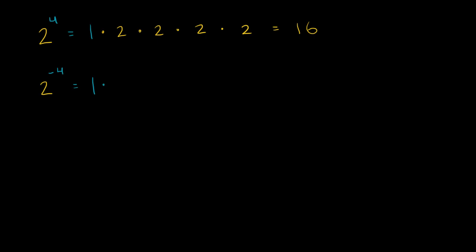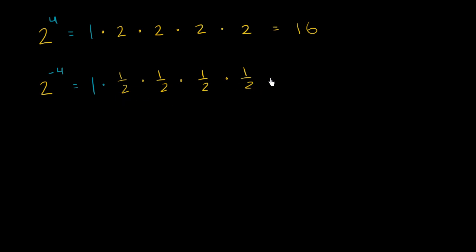Dividing by 2 is the same thing as multiplying by 1 half. So we could say that this is 1 times 1 half times 1 half — multiplying by 1 half four times is the exact same thing as dividing by 2 four times. And in this situation, 1 times 1 half is just 1 half, times 1 half is 1 fourth, times 1 half is 1 eighth, times 1 half is 1 over 16.